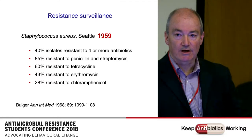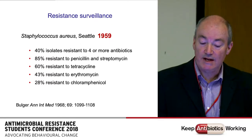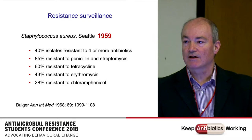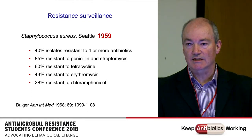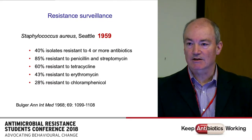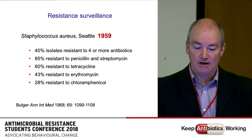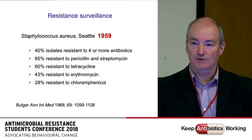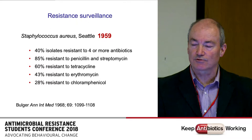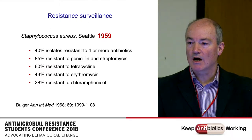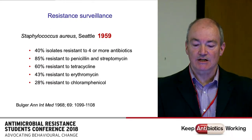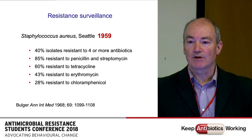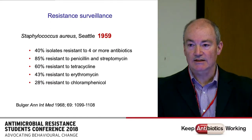Very many of us get involved in surveillance of antibiotic resistance. This is one typical report from Seattle, looking at the organism Staphylococcus aureus. The figures are quite big and scary: 40% of isolates were resistant to four or more antibiotics. I show this to emphasise that this is from 1959 in Seattle — so antibiotic resistance is not new.